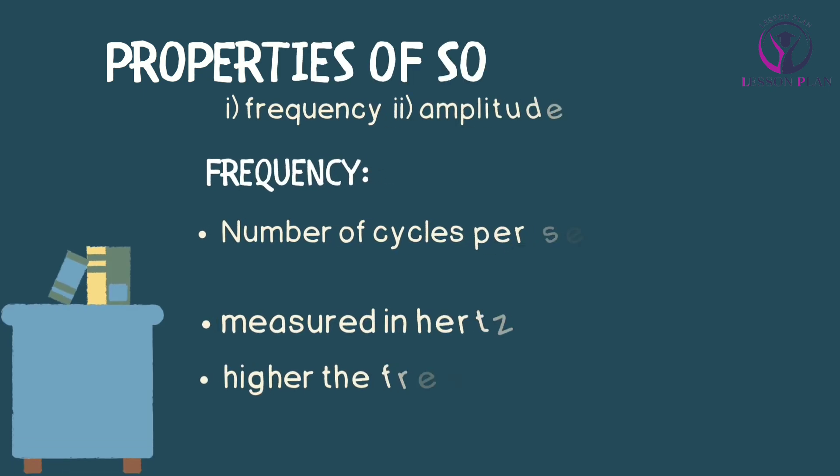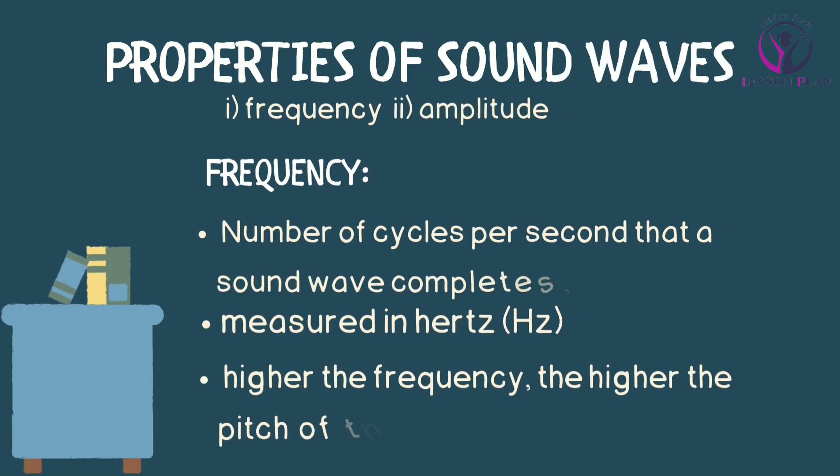Now let's explore the properties of sound waves. The two main properties we will focus on are frequency and amplitude. Frequency refers to the number of cycles per second that a sound wave completes, and it's measured in hertz (Hz). The higher the frequency, the higher the pitch of the sound.